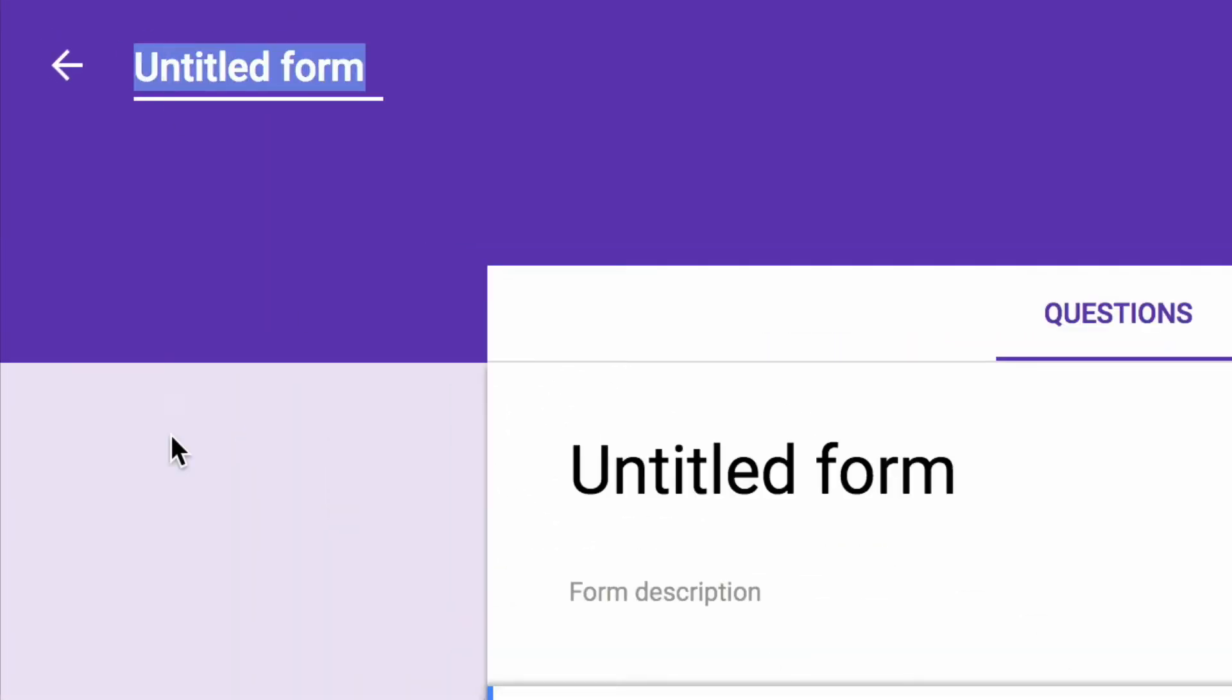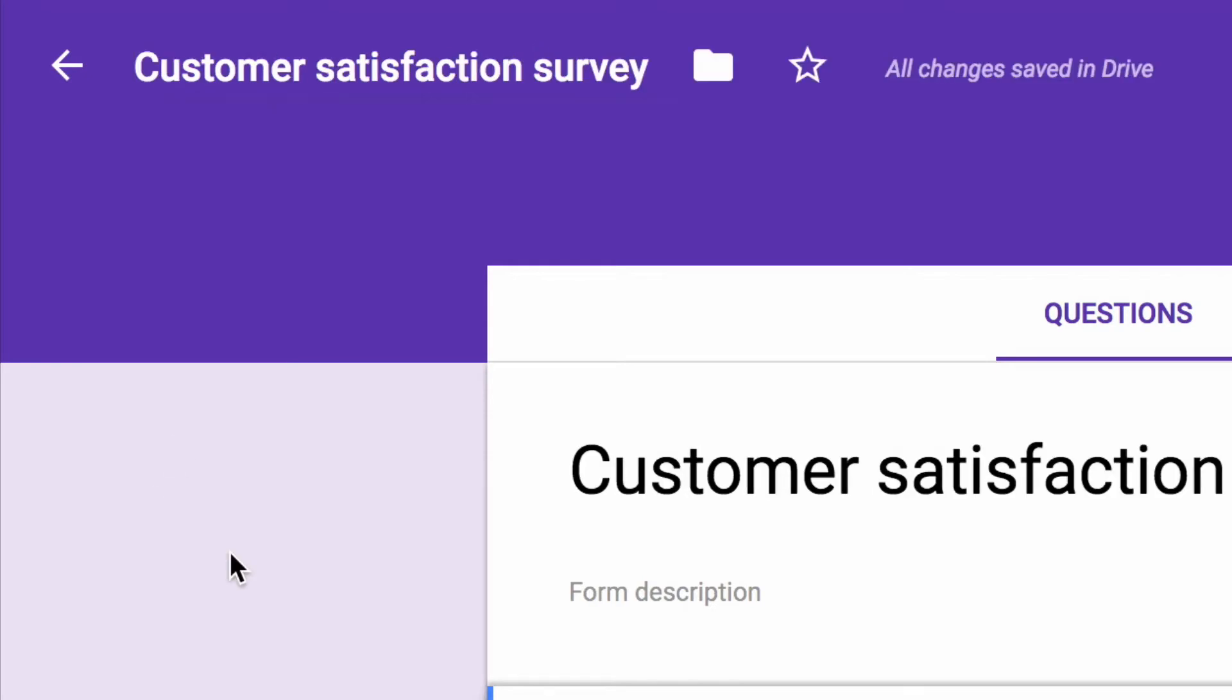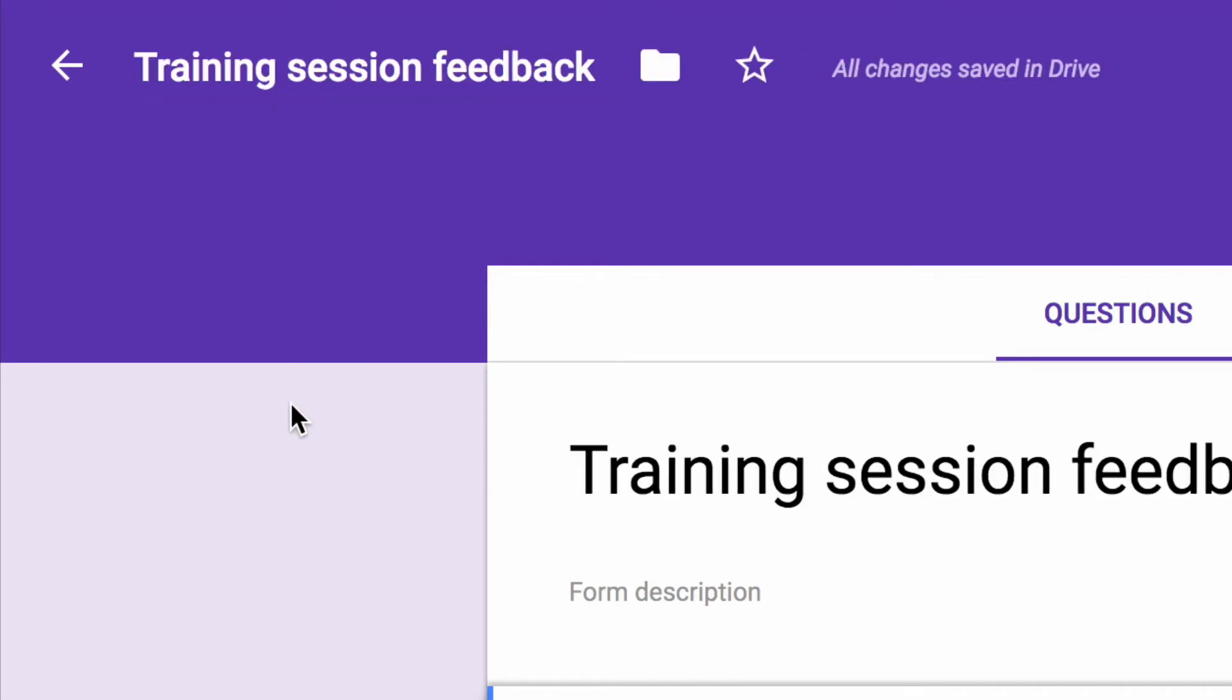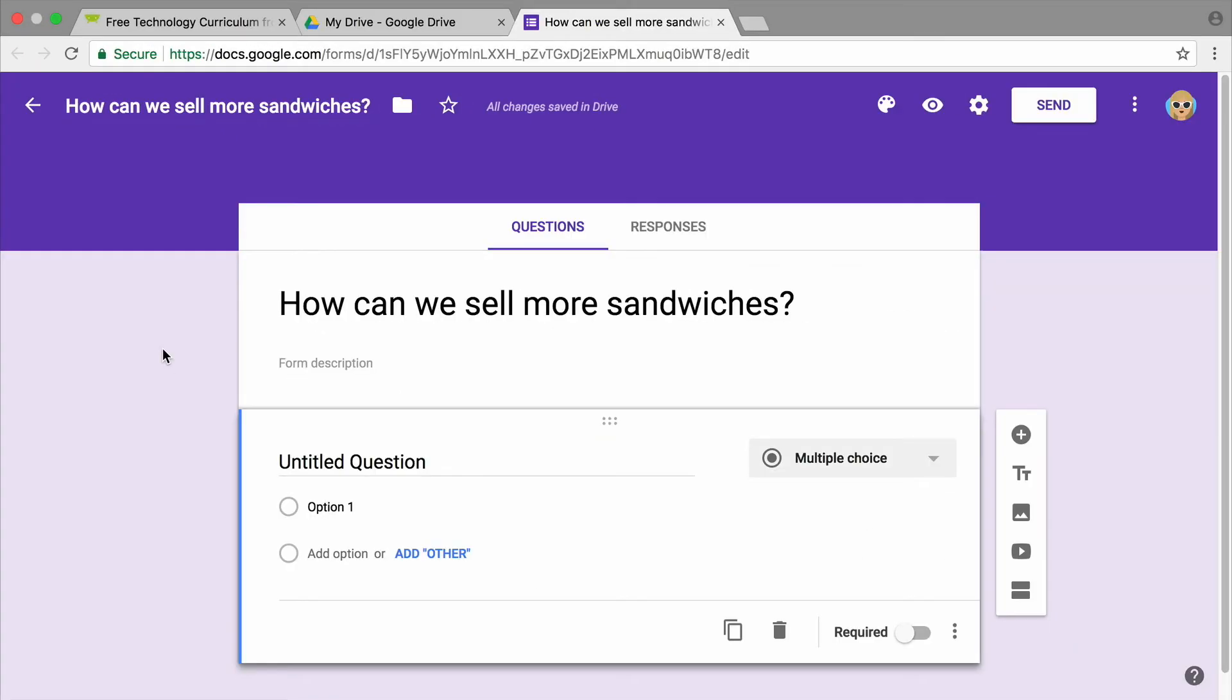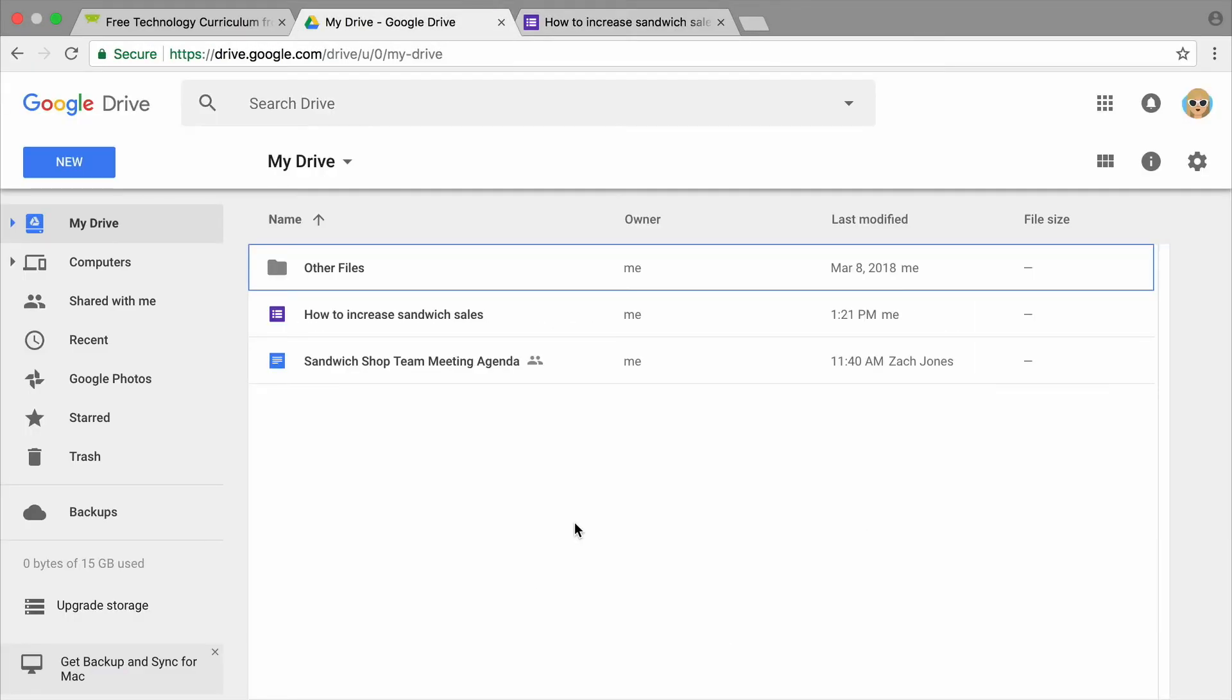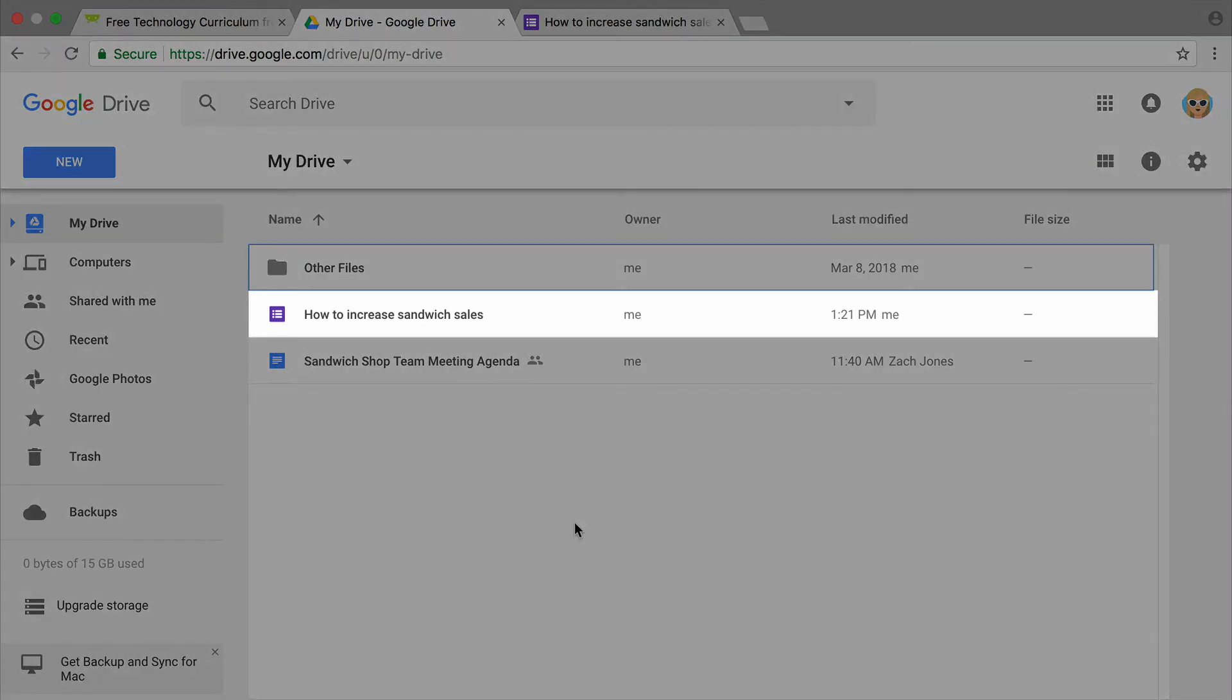Give your form a descriptive title. Your survey respondents will see the title when you share the survey. This is also the name it will be saved under in Google Drive, so a specific title will help you find it easily.